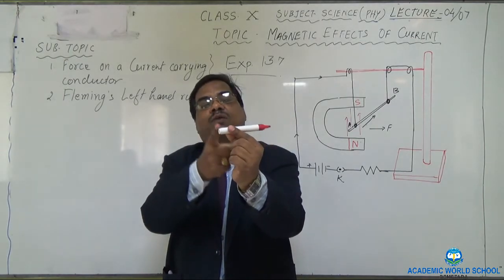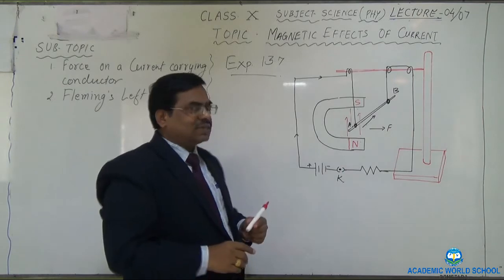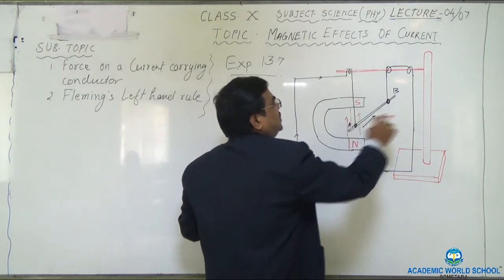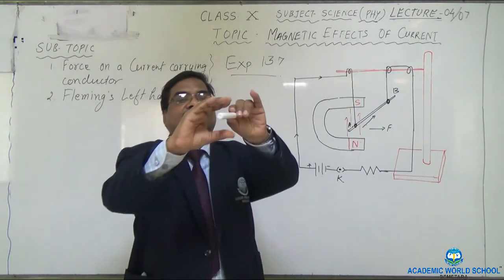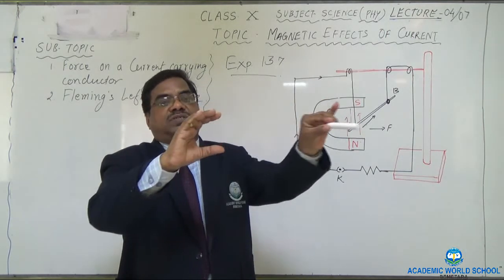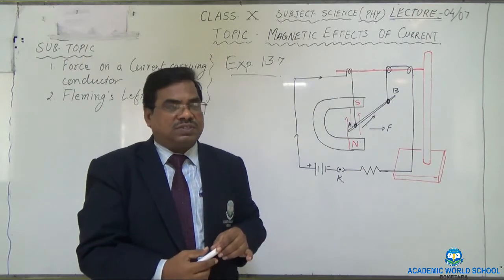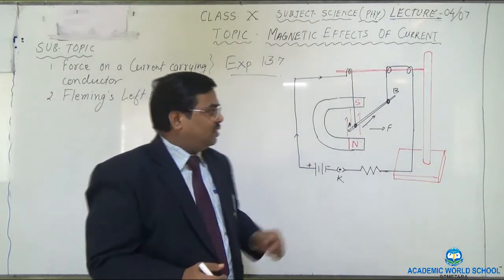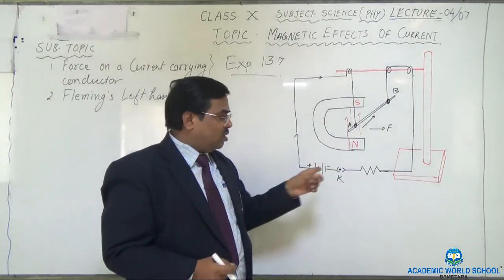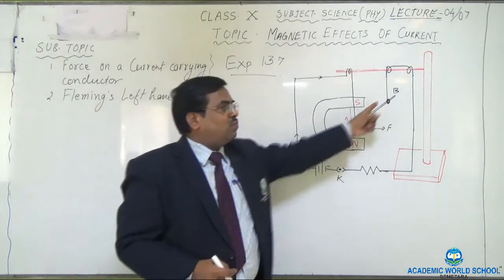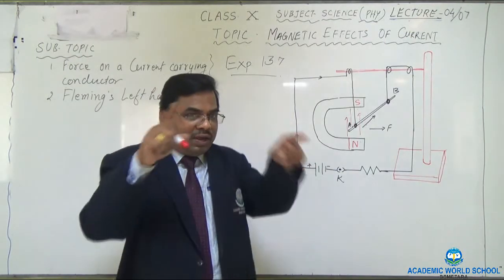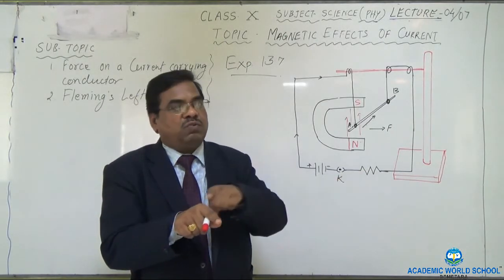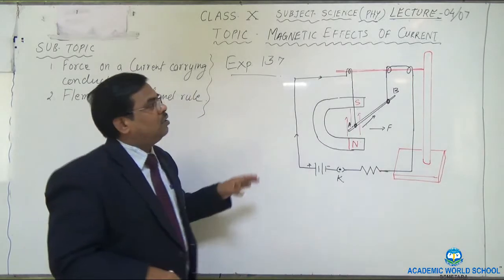The current is going from A end to B end. In this condition, it is observed that the conductor starts bouncing to the right-hand side — it experiences one force. This force originated because of the electromagnetic effect. There is a magnetic field, and when you press the key, current also flows in the conductor which is kept in the field. The interaction of the magnetic field and electric current produces one force — one jerk is experienced.